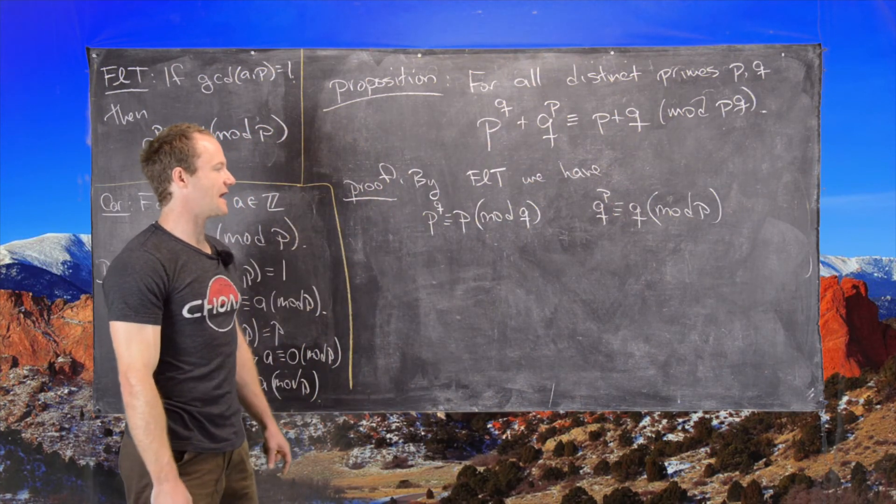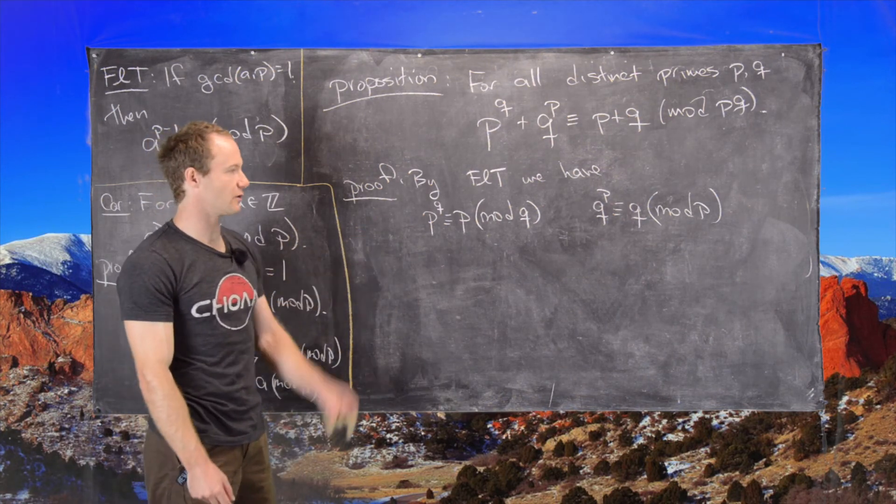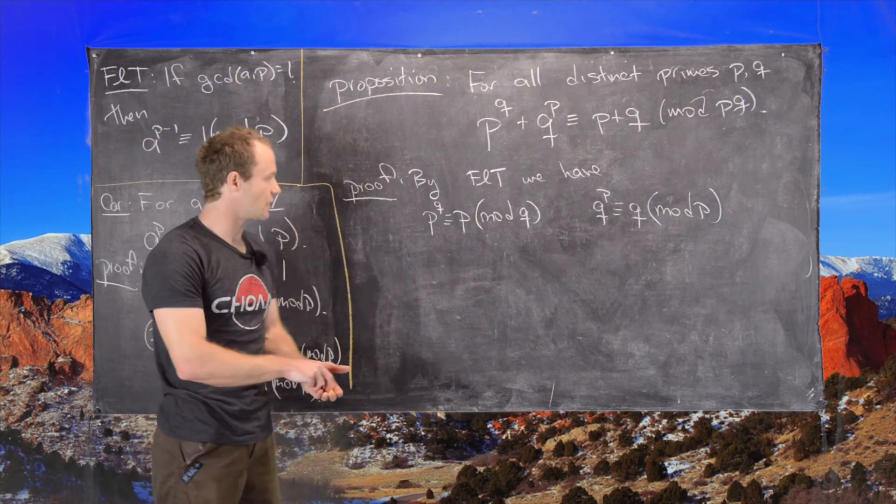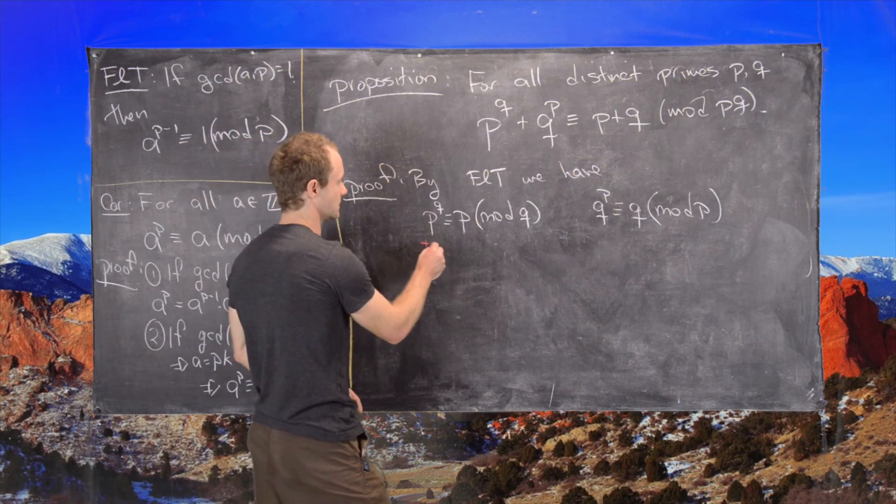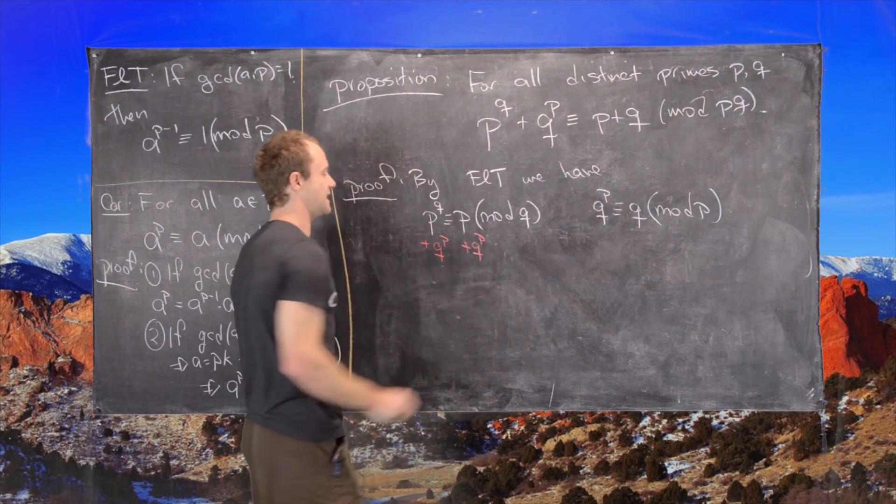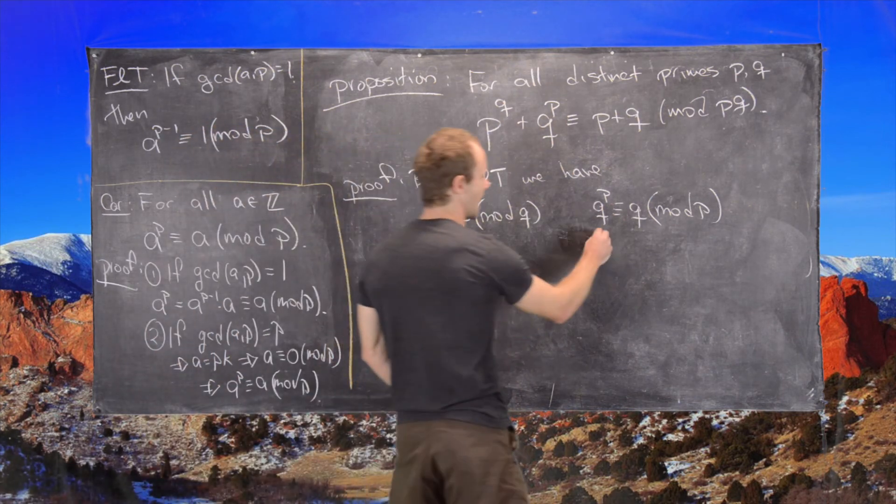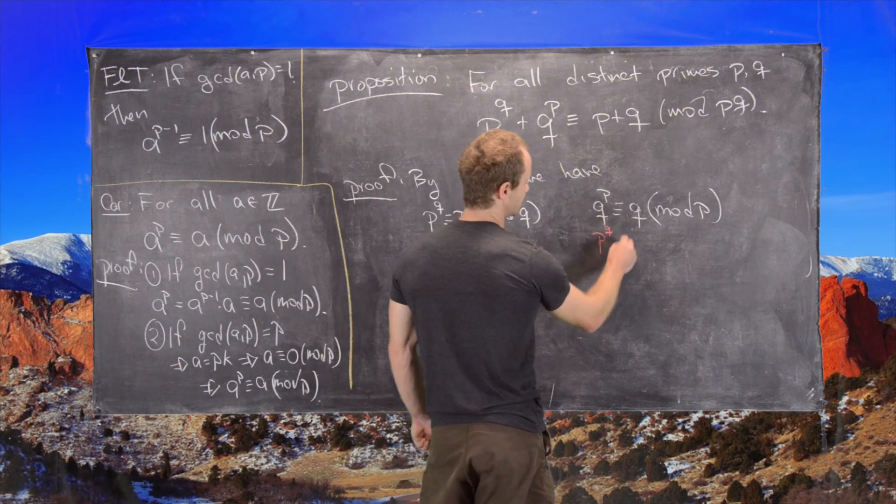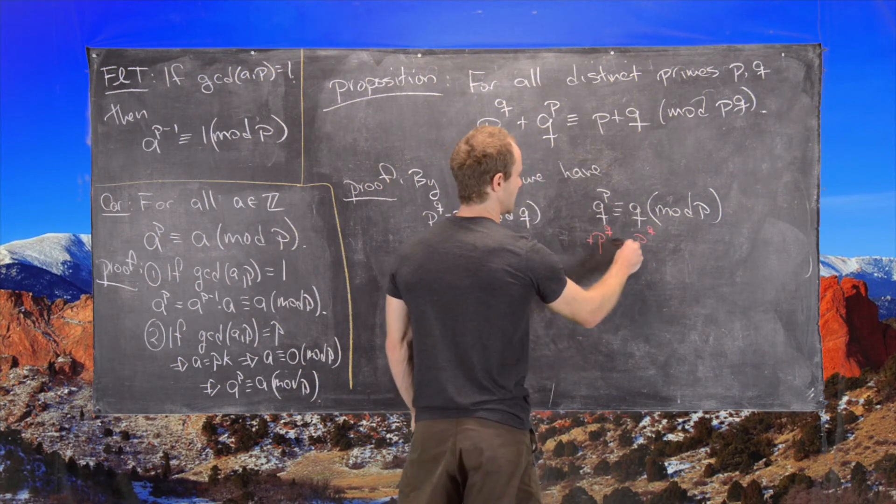So at this point, we want to add a copy of 0 to each side of these. And the 0 will take a different form. So over here, we want to add Q to the P to both sides. But now notice that Q is congruent to 0 mod Q. And here we'll add P to the Q. So plus P to the Q on both sides. And again, P is congruent to 0 mod P.